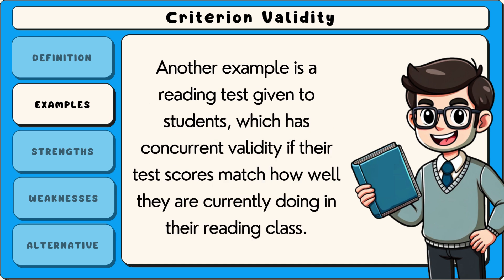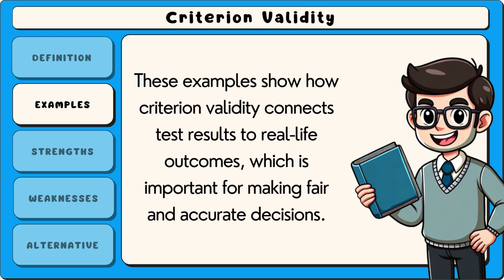Another example is a reading test given to students, which has concurrent validity if their test scores match how well they are currently doing in their reading class. These examples show how criterion validity connects test results to real-life outcomes, which is important for making fair and accurate decisions.